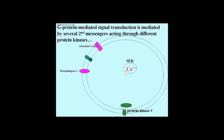Cyclic AMP is one of several second messengers in cells made during a G-protein-mediated signal transduction. Some of the others are shown in this slide. First, let's include the cyclic AMP-mediated activation of protein kinase A, or PKA for short.